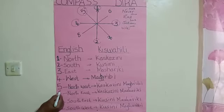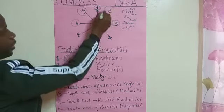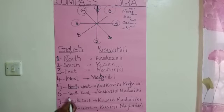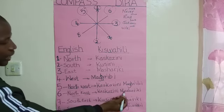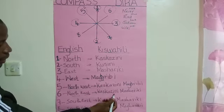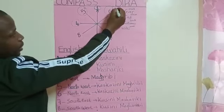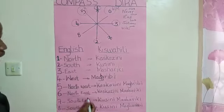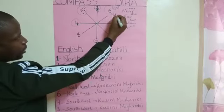We go to number six. Number six in English is Northeast. In Kiswahili it is kaskazini mashariki — kaskazini mashariki. And in English we say northeast. Northeast. I believe you are following properly.